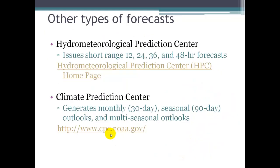There's an organization within NOAA called the Hydrometeorological Prediction Center that issues short-range forecasts on the order of 12 to 48 hours. And the Climate Prediction Center, also within NOAA, generates monthly, seasonal, and longer-term outlooks.